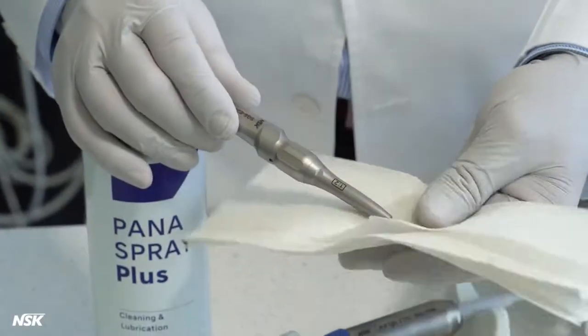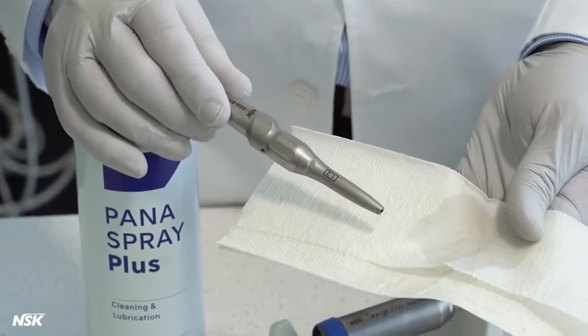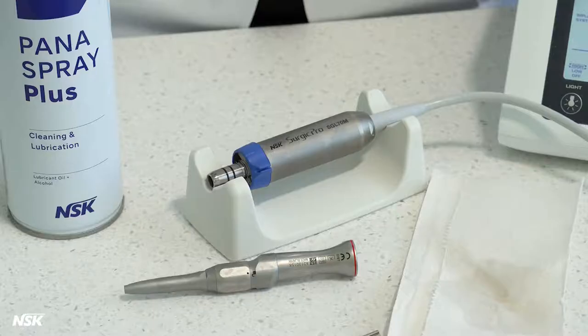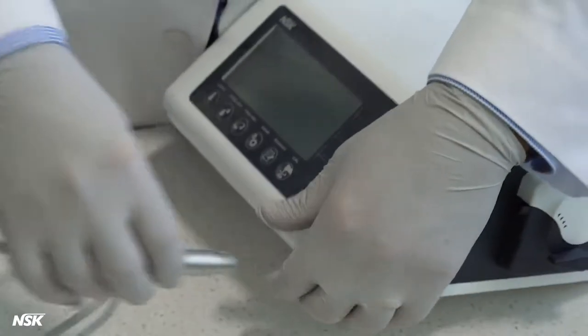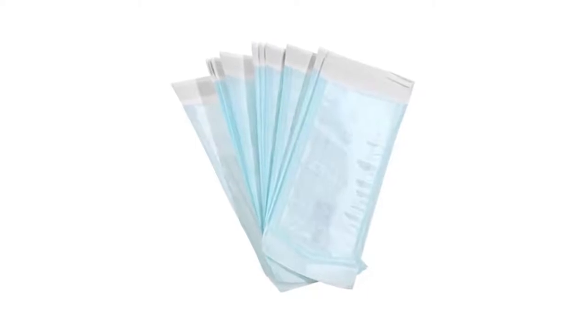The attachment is ready now to be autoclaved using the FDA-approved pouch. The entire motor and its cord are autoclavable. To disconnect the motor cord, pull back the metal sleeve and pull out the cord. Place the attachment and the micromotor in separate autoclave pouches and seal them before putting into autoclave.